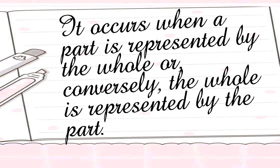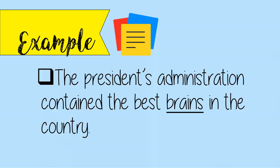Synecdoche occurs when a part is represented by the whole, or conversely, the whole is represented by the part. Example: the president's administration contained the best brains in the country — where 'brains' represents the intelligent people in the country.